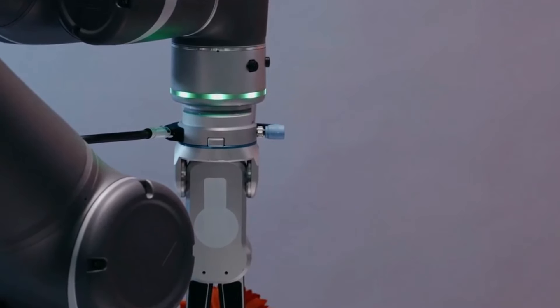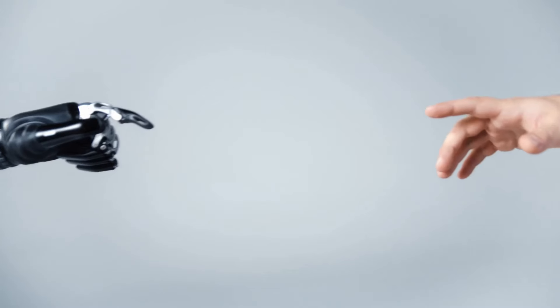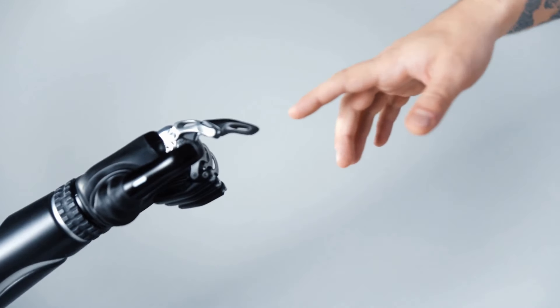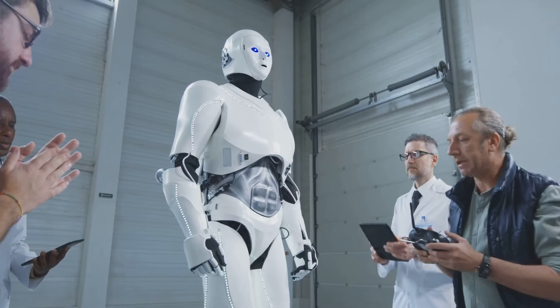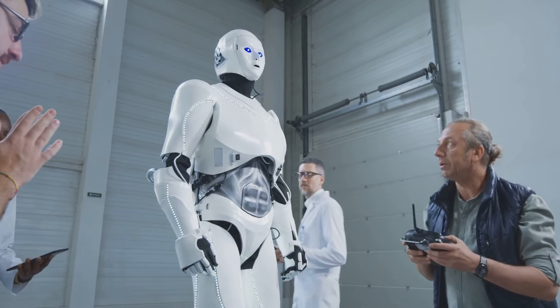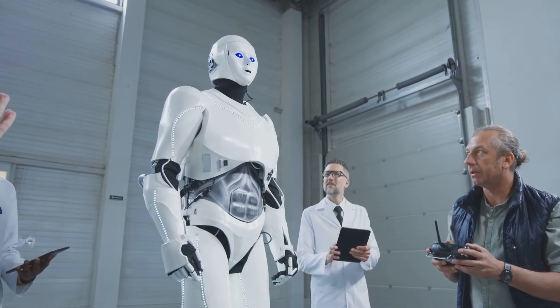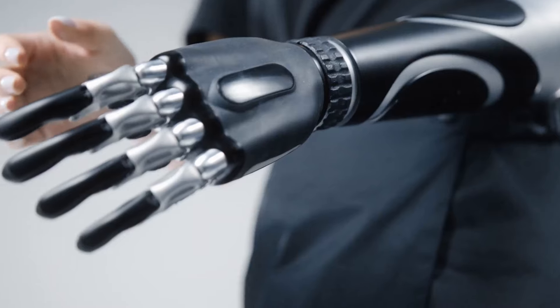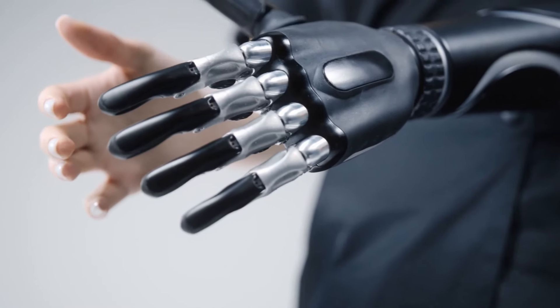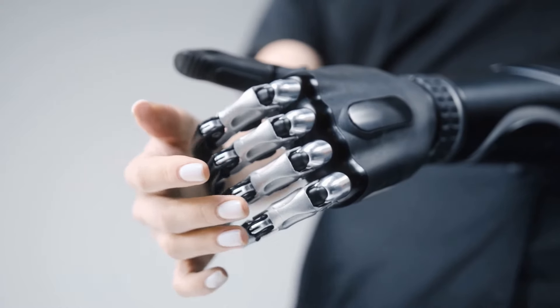The key to unlocking this potential lies in responsible development and deployment of these technologies. We must prioritize safety, transparency, and ethical considerations at every stage of development. Robust regulations and guidelines are essential to ensure that AGI-powered robots are used for the benefit of humanity, addressing concerns about bias, discrimination, and unintended consequences. The future of humanoid robots hinges on our ability to navigate the ethical complexities and harness their potential for good.